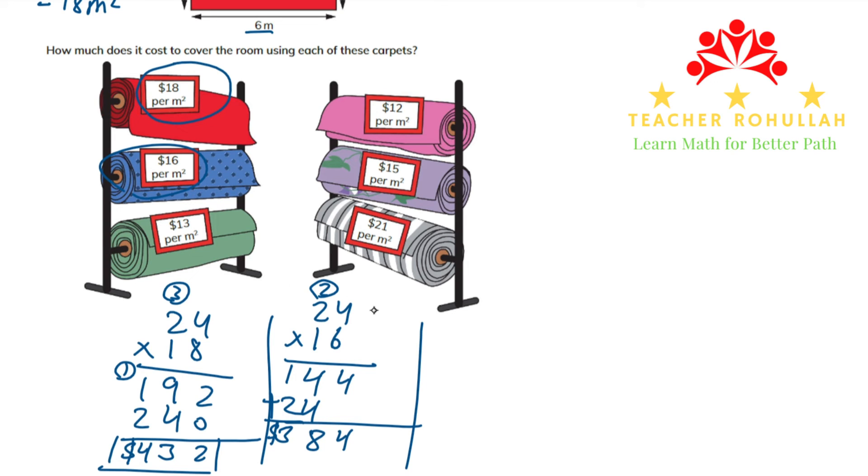And the price of the one which is $13, we have to multiply 24 by 13. So 3 times 4 is 12, 1 should be carried here. 3 times 2 is 6 plus 1 is 7. 1 times 4 is 4 and 1 times 2 is 2. So now 2 here, 4 plus 7 is 11 and 1 plus 2 is 3. So the price of the one which is $13 per square meter is $312.